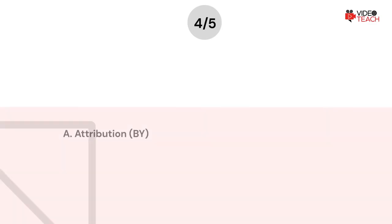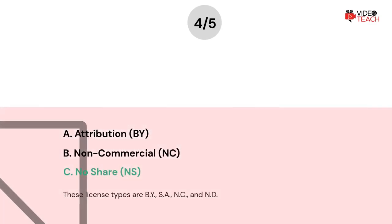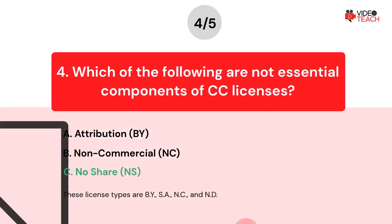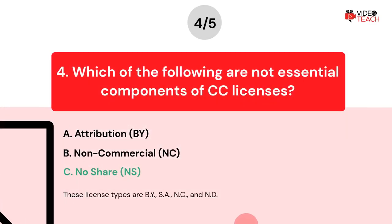The correct answer is C: No Share. The actual license types are BY, SA, NC, and ND.